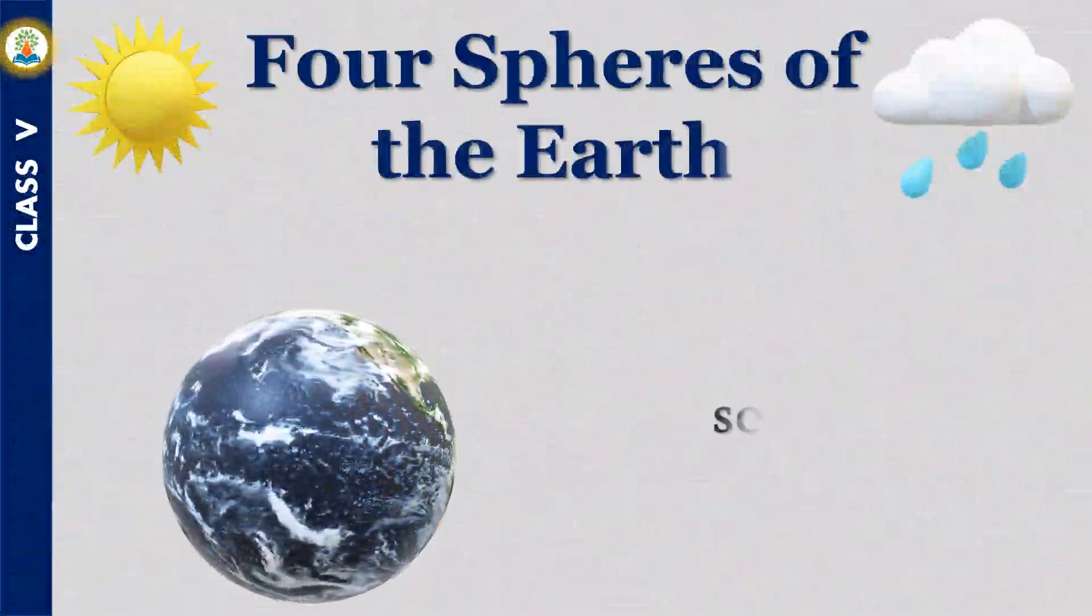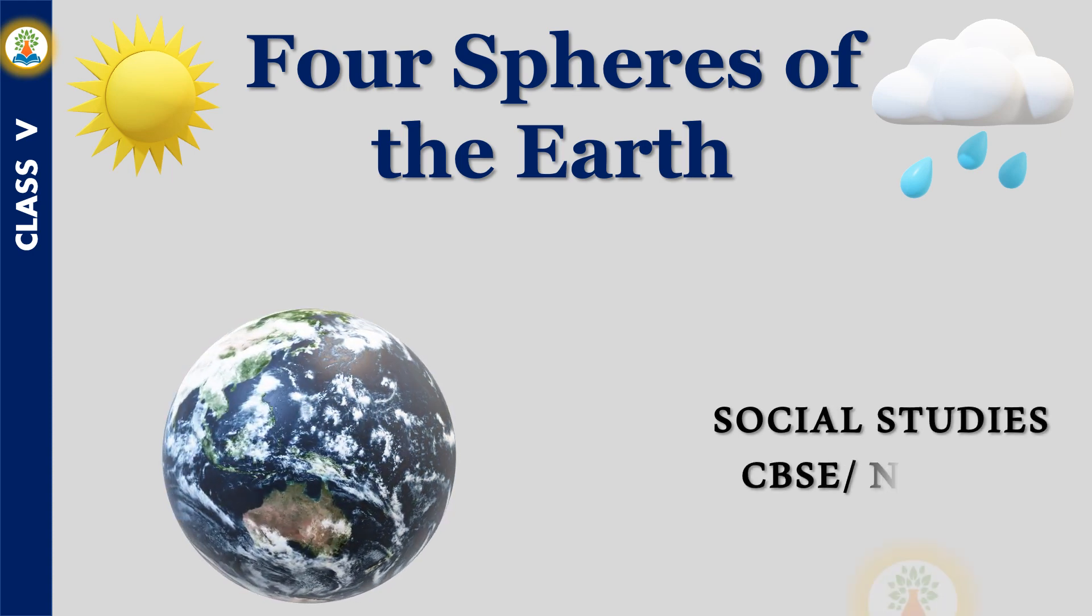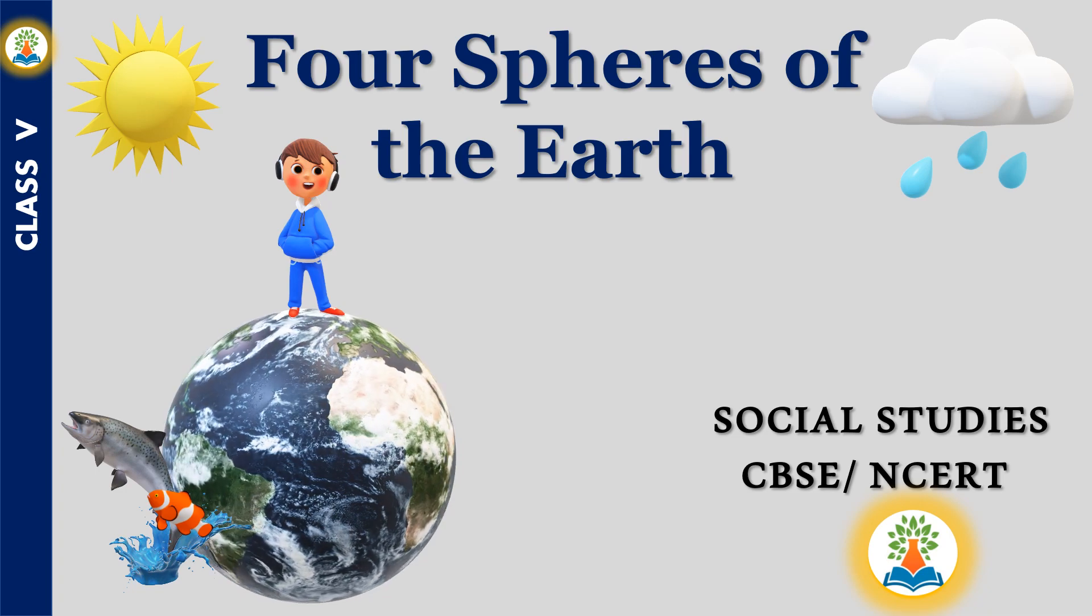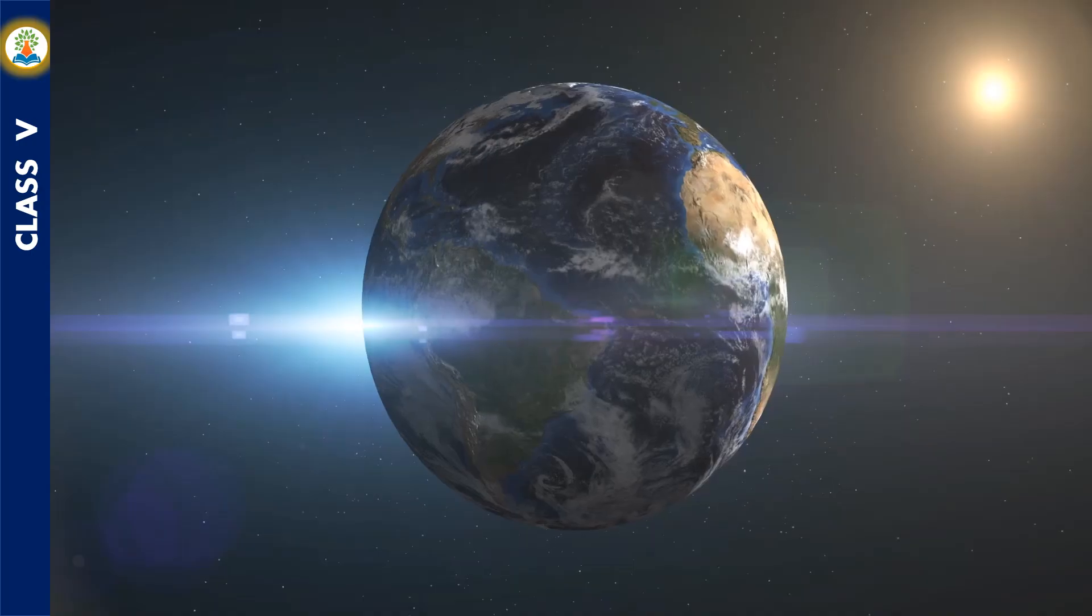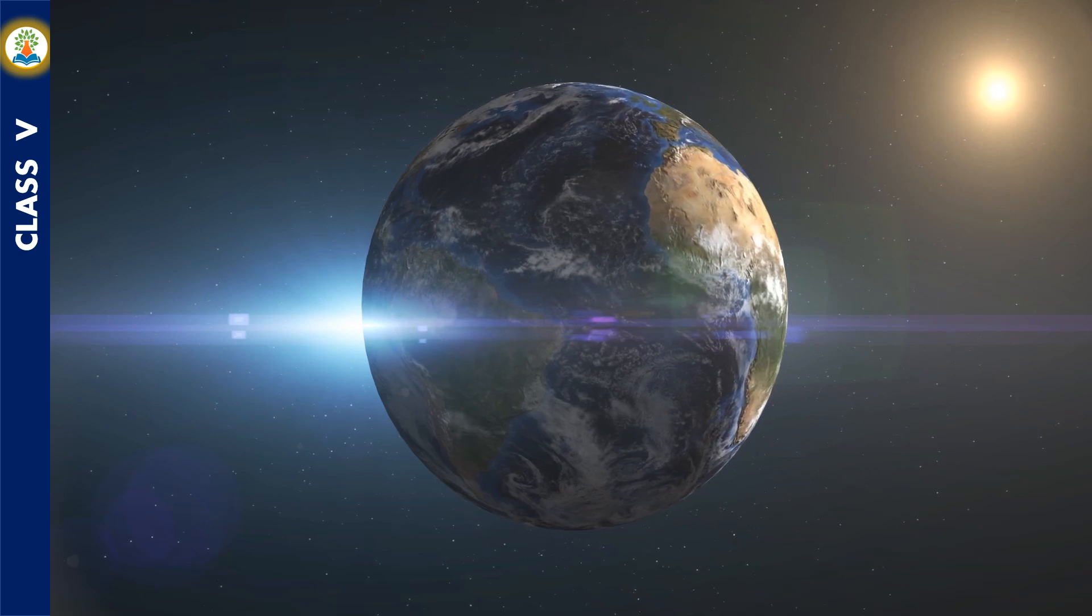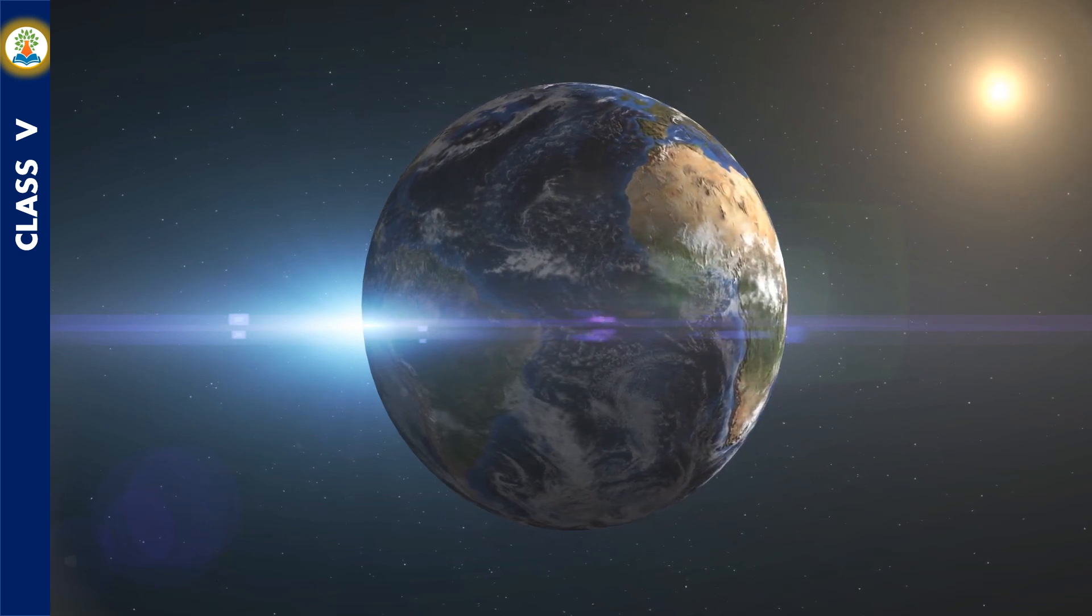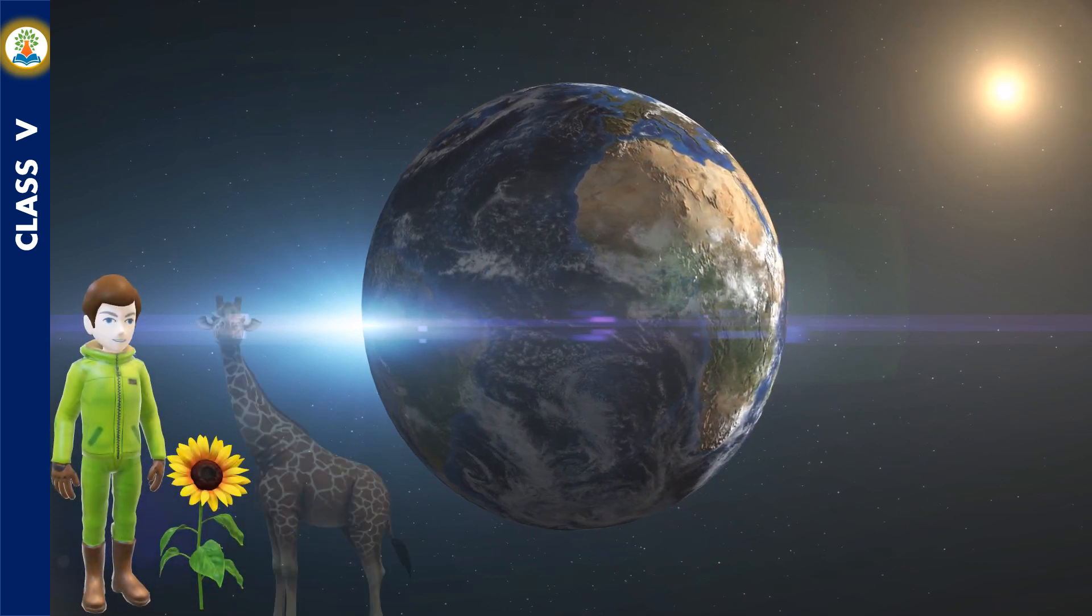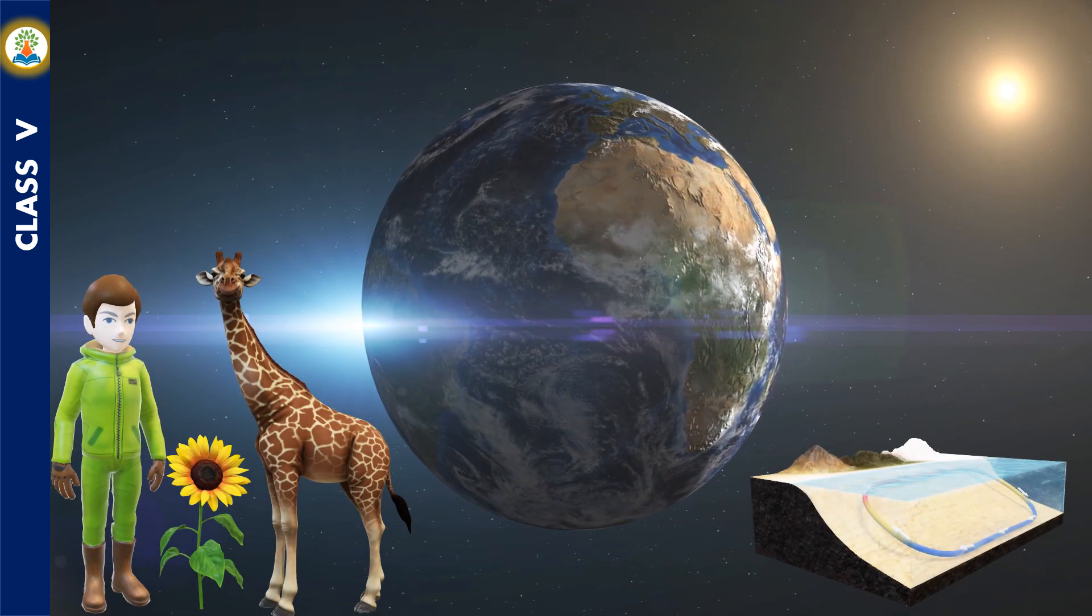Hello friends, in this video we will learn about four spheres of the Earth. Our Earth is a unique planet because it has all those things which make life possible. We are able to live on Earth because of what is there in our surroundings: plants, animals, soil, air, water, and sunlight. Our environment consists of both living and non-living things.